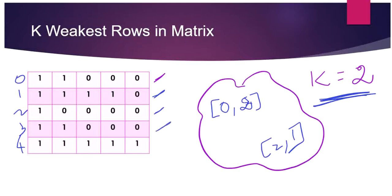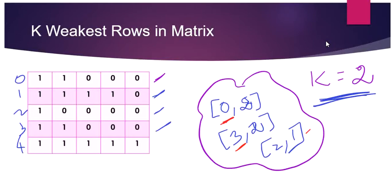The next row is row 3 with 2 soldiers. The heap now holds values with soldier counts 1, 2, and 2. Clearly 1 is the lowest so we keep it. Between rows 0 and 3, both with 2 soldiers, we check the row index: 0 is less than 3, so row 0 is in front and is considered weaker. We remove row 3 as it is the strongest of the two.